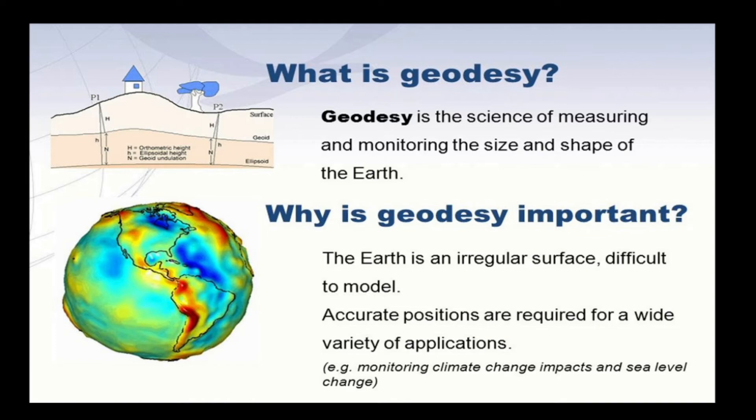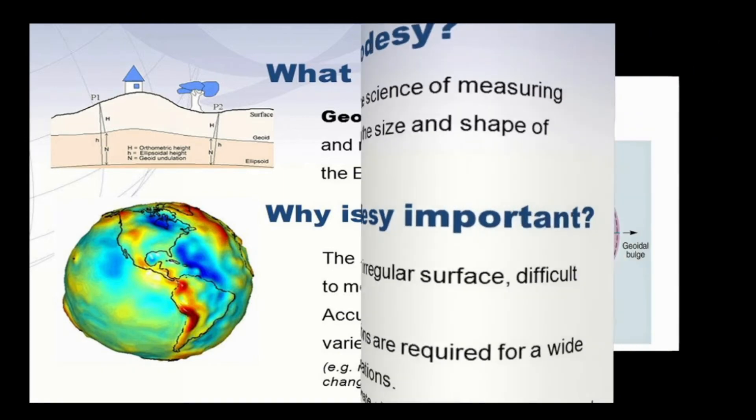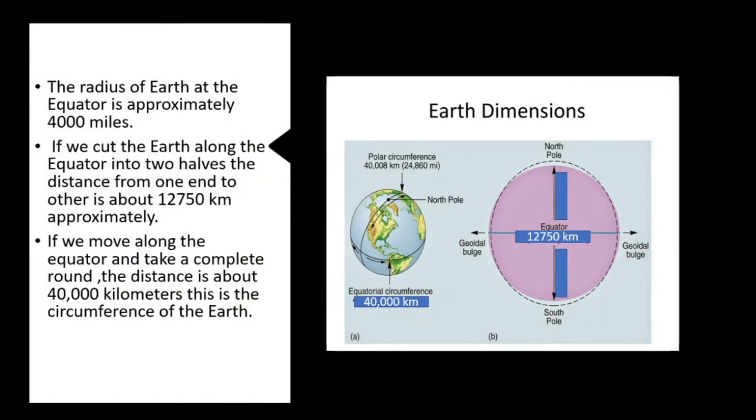So here are the dimensions of the Earth. The radius of the Earth at the equator is approximately 4,000 miles. And if we cut the Earth along the equator into two halves, the distance from one end to another is about 12,750 kilometers.